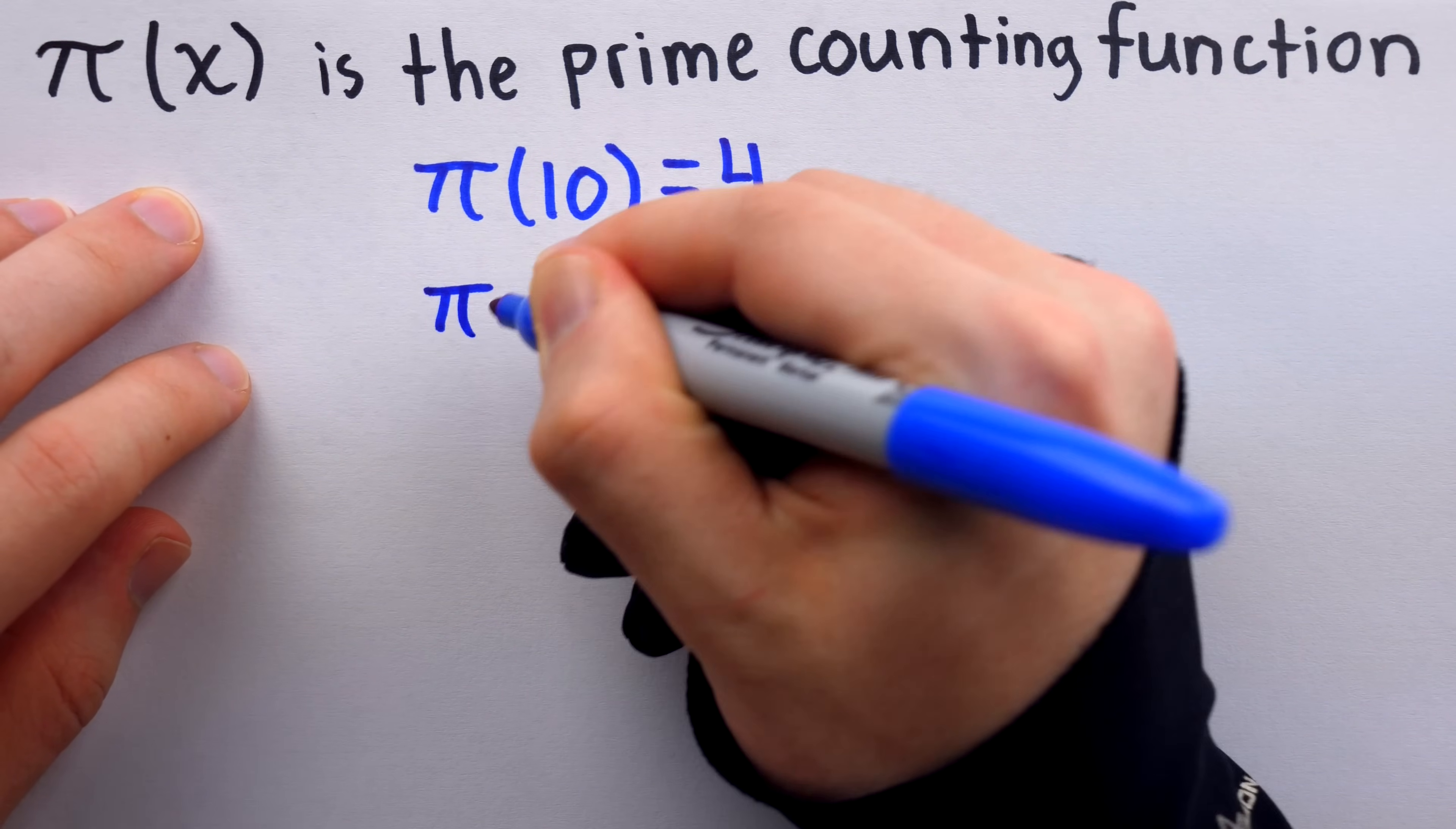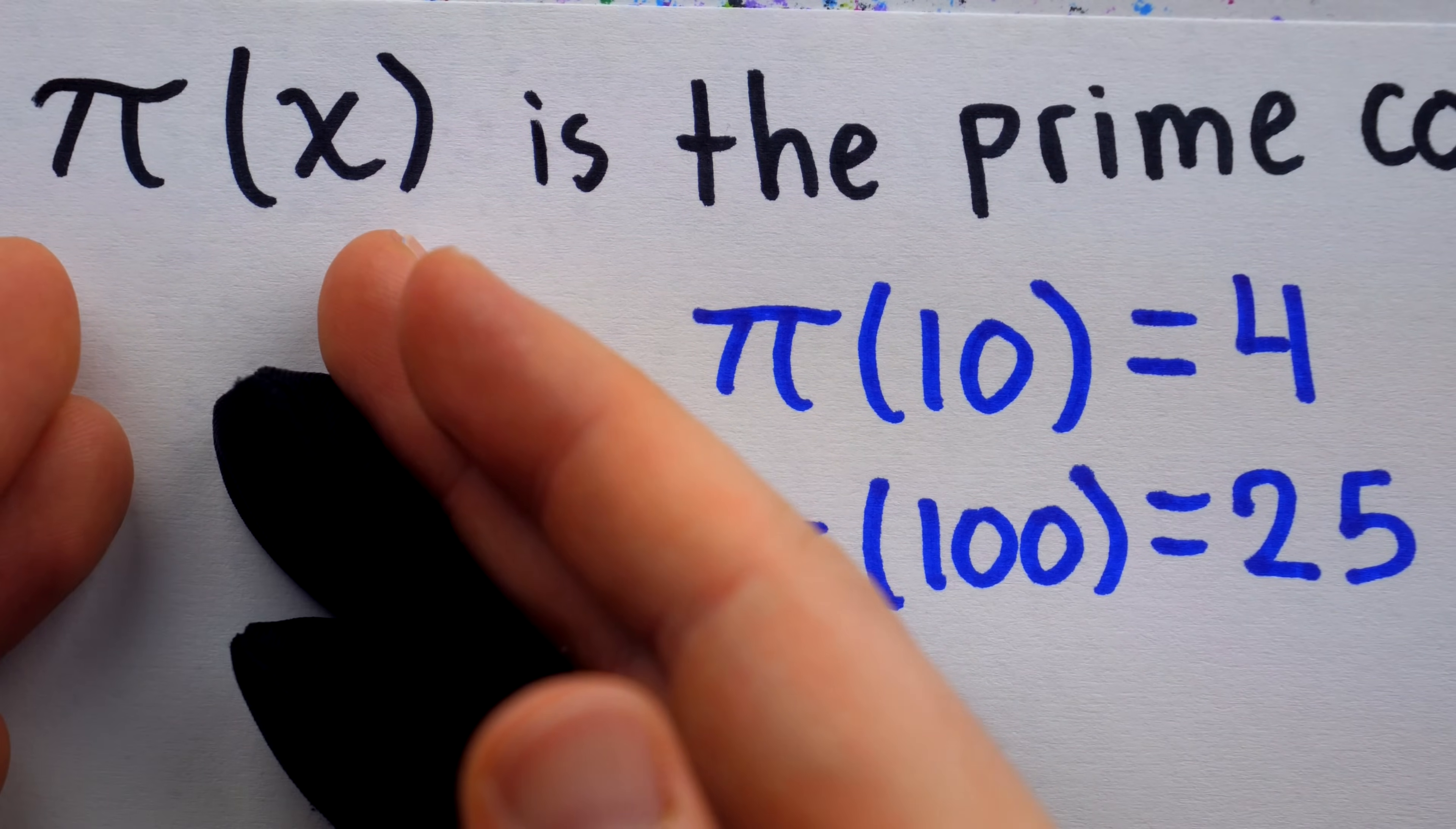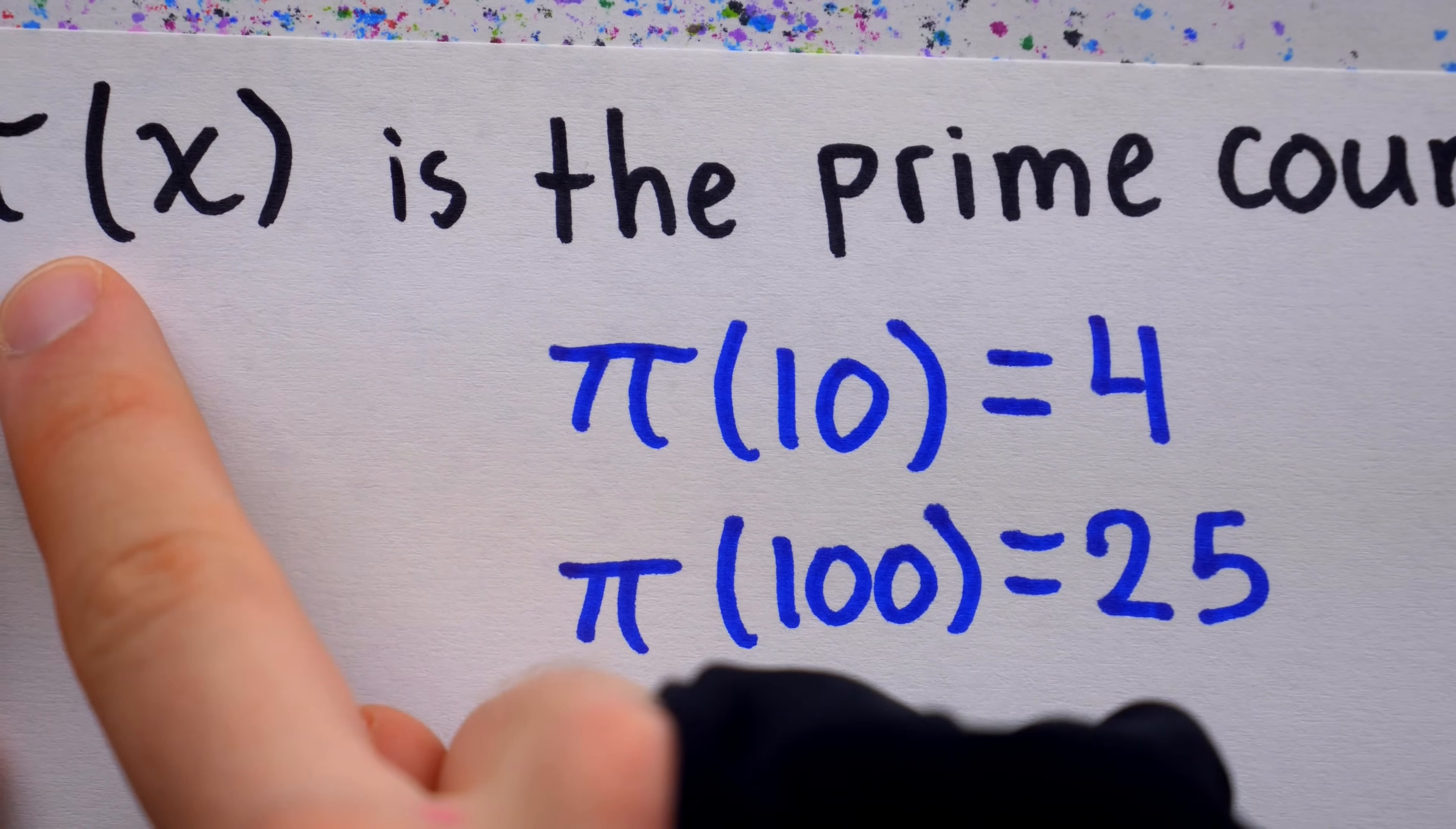As another example, Pi of 100 happens to equal 25. There are 25 prime numbers less than or equal to 100. Of course, mathematicians care deeply about prime numbers, and so too care deeply about the prime counting function. But since primes are so mysterious, the function that counts them is as well, and mathematicians would love a great way to approximate values of the prime counting function. I know what Pi of 10 is because I can just count the primes one by one, same with Pi of 100, but I don't have any nice formula for finding what Pi of x is for any given x value.